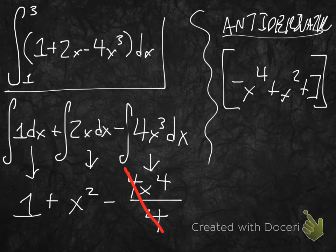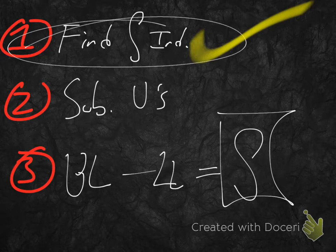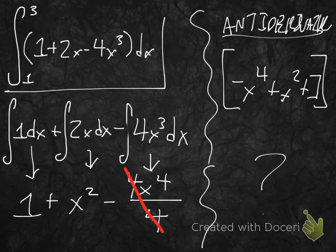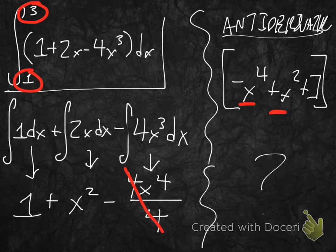We've finished step 1. Now for step 2 — substitute our values. We'll substitute our upper and lower limits of integration. Our upper limit is 3 and our lower limit is 1. For the upper limit, everywhere we see an x, we put in 3.